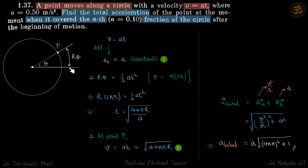We can say that path length r theta equals half a t², and theta is n times 2π. The nth fraction of a circle means theta is nth fraction of whole angle, that is 2π. So theta is n into 2π. We put that, and from here we get time equal to this much.